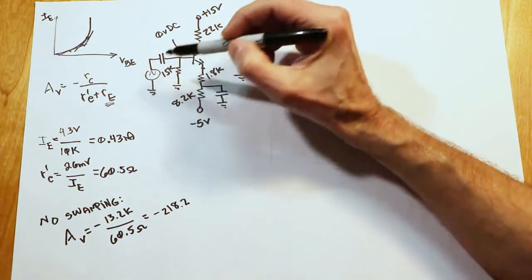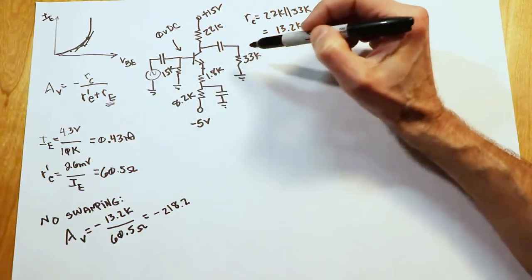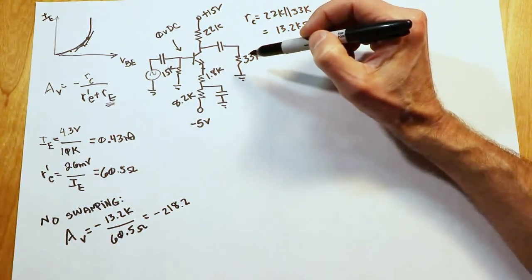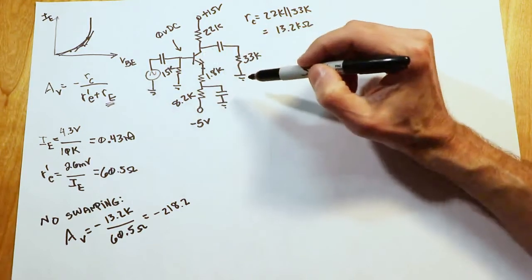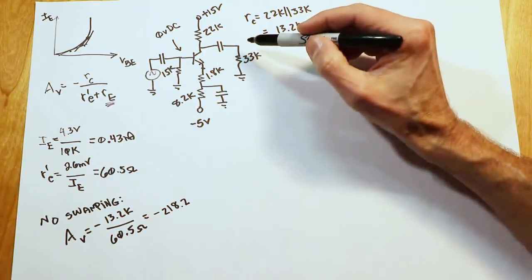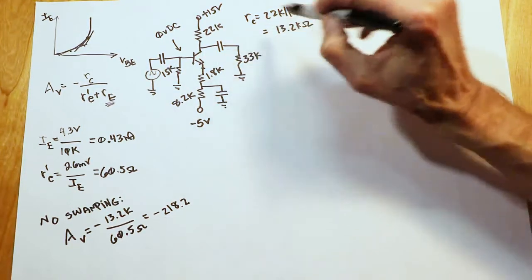In other words, whatever input signal we have will be 218 times larger out here at the 33K at our load. Put in one millivolt, we're going to get 218 millivolts out here. Of course, the minus sign indicates that it's inverted. Positive sign here is going to give us a negative sign out there.